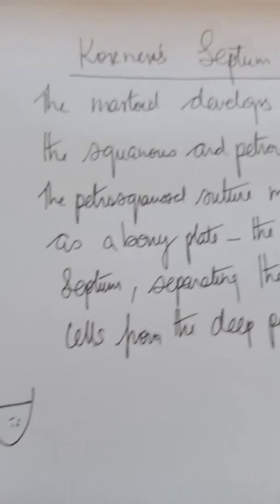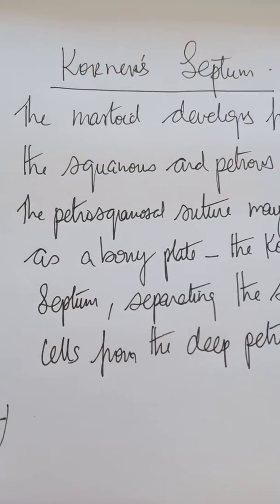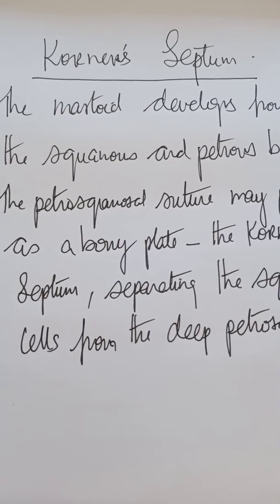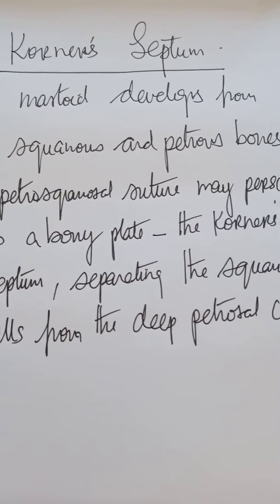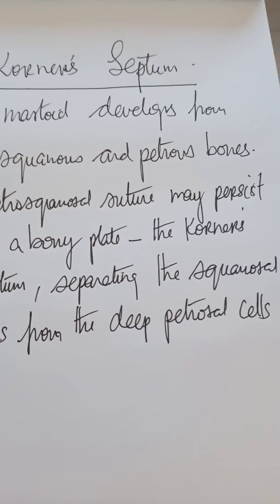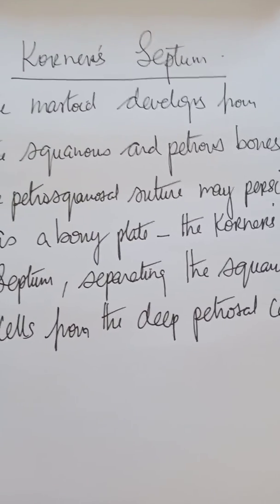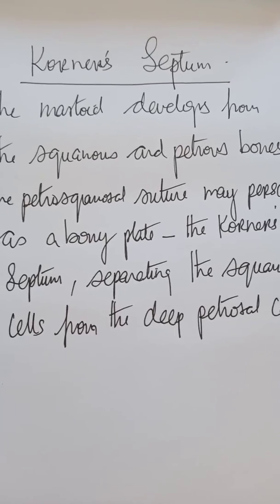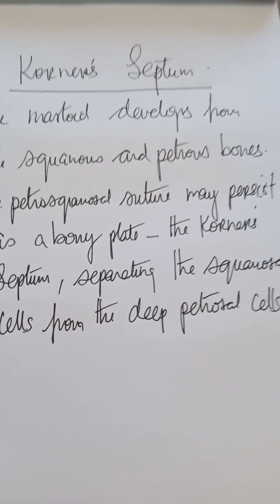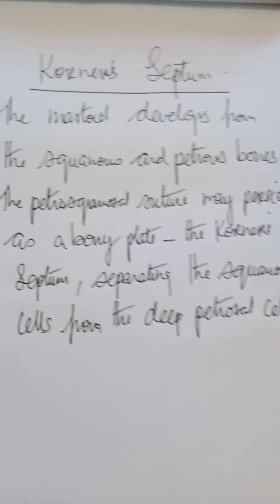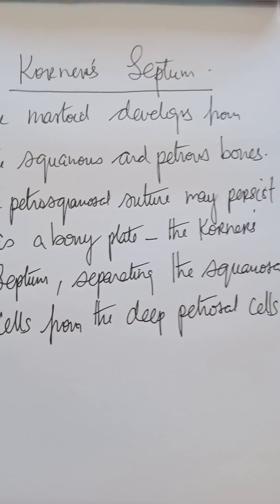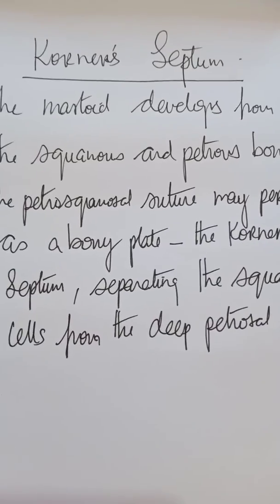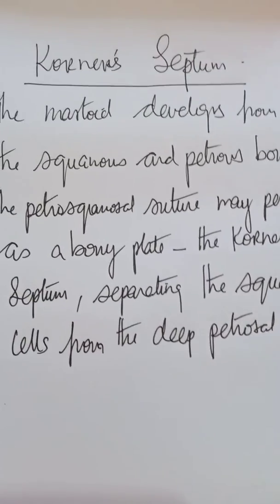Again, the Körner's septum is the petrosquamous suture which persists as a bony plate, thereby separating the squamous cells from the deep petrosal cells.